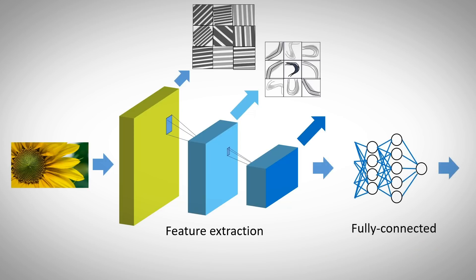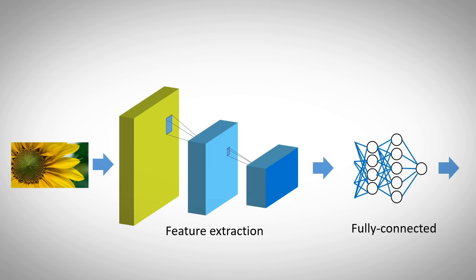And now the fully connected layers can determine if this is a flower, based on the combination of other features that were extracted. And this is AI for vision in a nutshell.